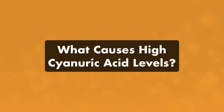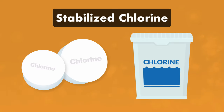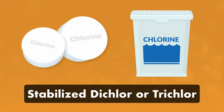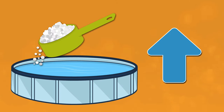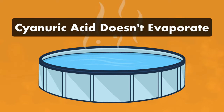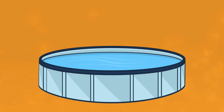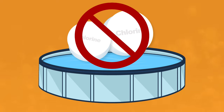First, what causes high CYA levels? The most common contributor to high CYA levels is stabilized chlorine. Most chlorine tablets or chlorine granules are made of stabilized dichlor and trichlor, and stabilized chlorine comes with small amounts of cyanuric acid. As you add stabilized chlorine to your water, your CYA levels can build up over time, even as your chlorine levels fluctuate up and down. That's because as water evaporates from the swimming pool, the cyanuric acid remains in the water. So if you're trying to bring down your cyanuric acid levels, the first step is to stop adding stabilized chlorine.